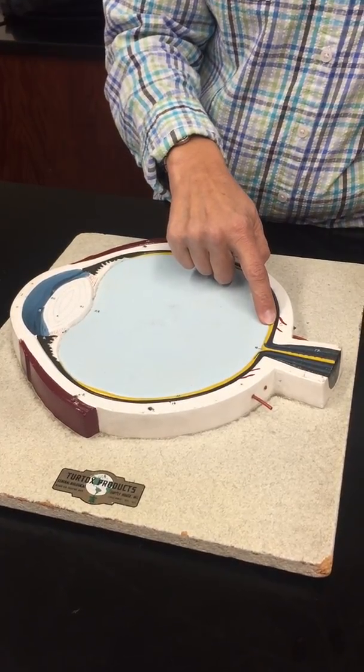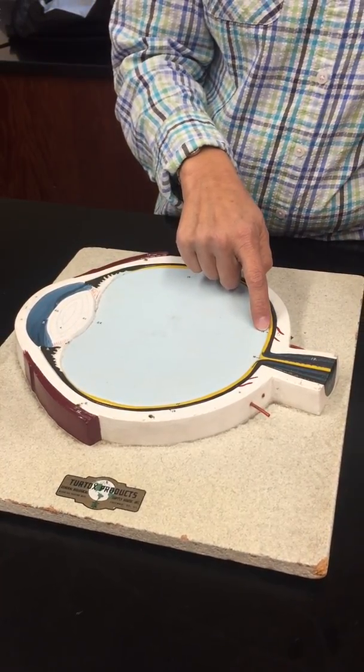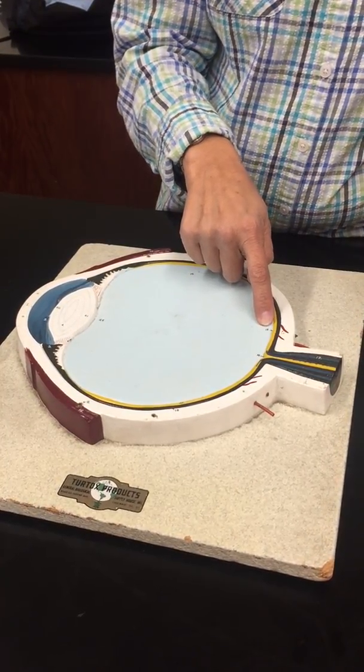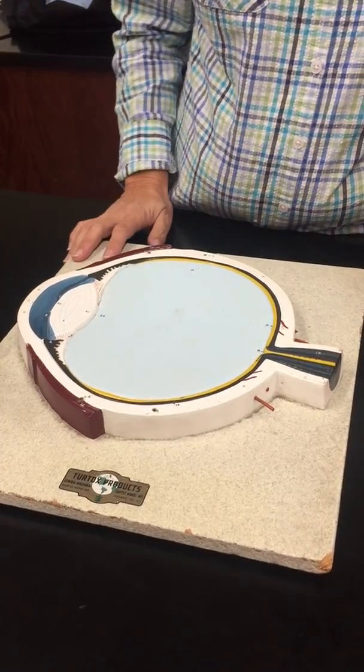And this area right here is the area of sharpest vision. You could either call that the fovea centralis or the macula lutea. That's it.